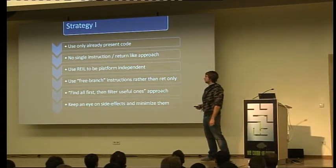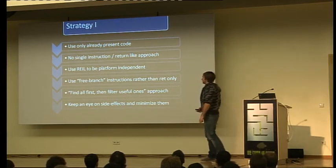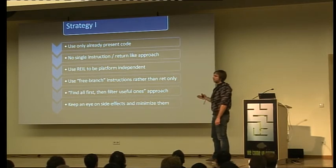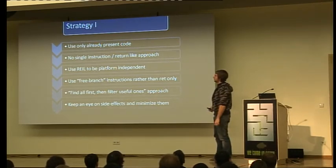We use REIL — the Reverse Engineering Intermediate Language — which we developed at Zynamics. It provides an intermediate representation of all the assembly languages we've been able to translate into REIL. Because we use REIL, we can write our algorithms to utilize REIL rather than native assembly language, making them architecture-independent once any native assembly language has been translated into REIL.